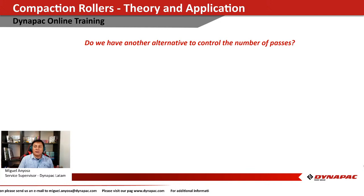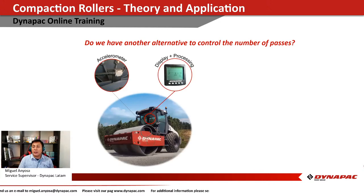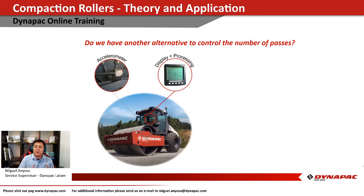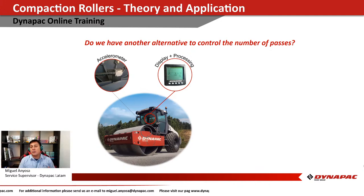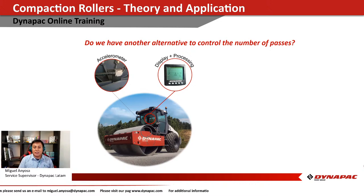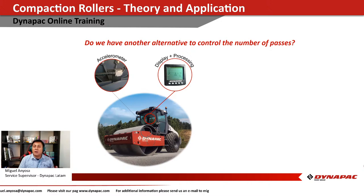As an alternative, you can use the compaction meter — an accelerometer mounted in the cylinder that measures the bouncing effect and shows numbers on a display, letting you know when the target compaction level has been reached. You have to select different measurement levels according to the material you're working with.